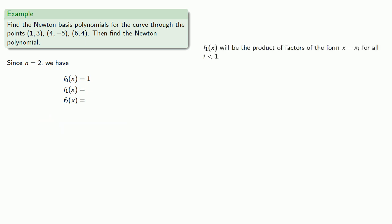Now f1(x) will be the product of factors of the form x minus xi for all i less than one. The only such factor is actually x minus x0, that's our first x coordinate. And so f1(x) is x minus one. f2(x) will be the product of the factors of the form x minus xi for all i less than two. And these are the factors x minus x0 and x minus x1. So N(x) = a0 plus a1 times (x minus 1) plus a2 times (x minus 1)(x minus 4).